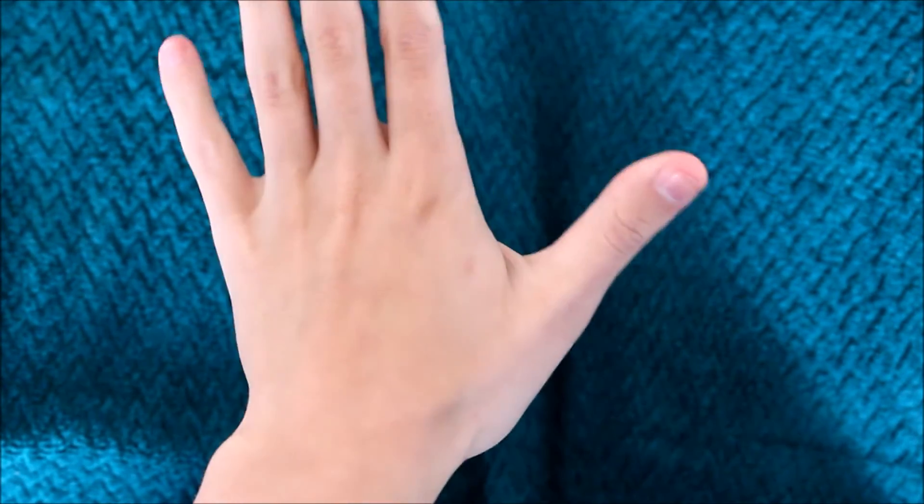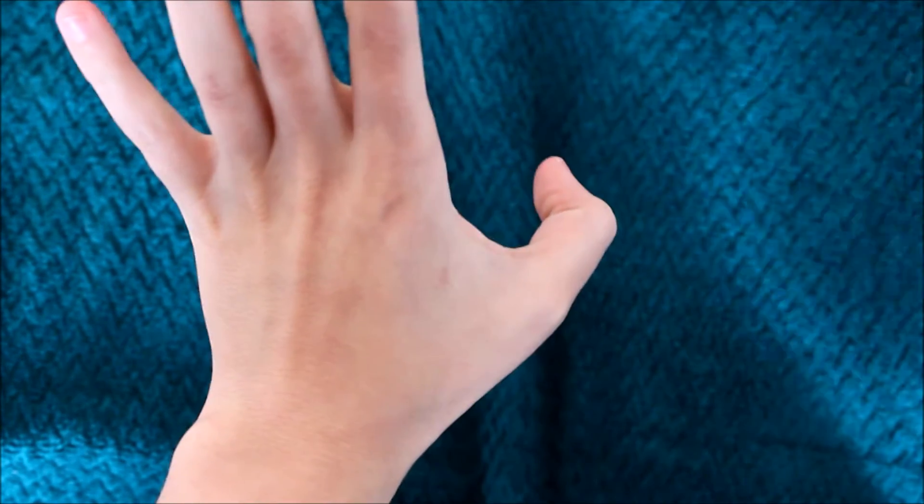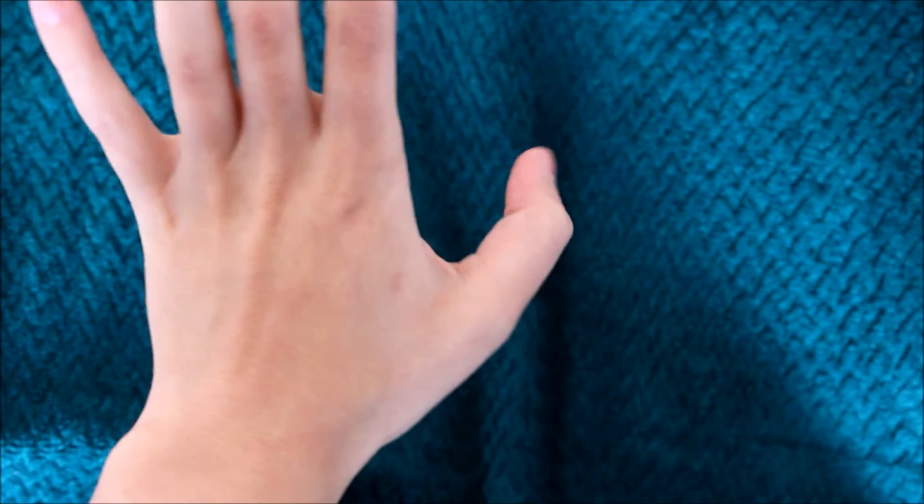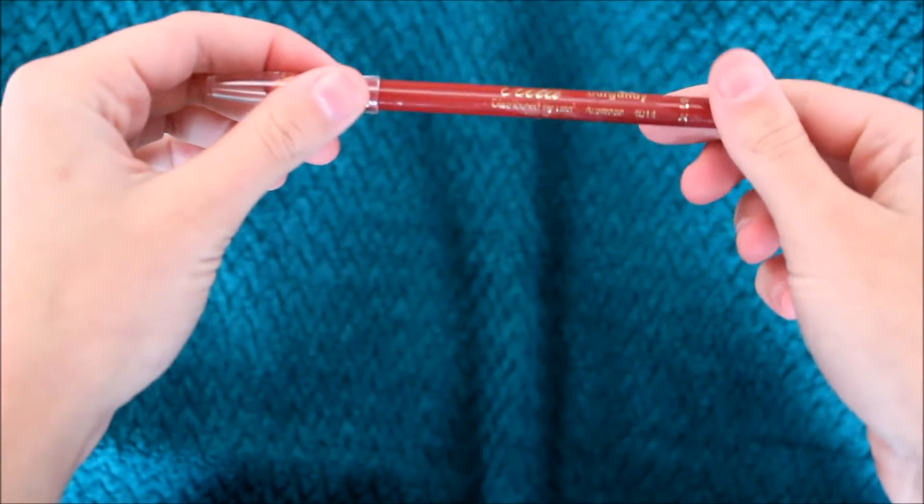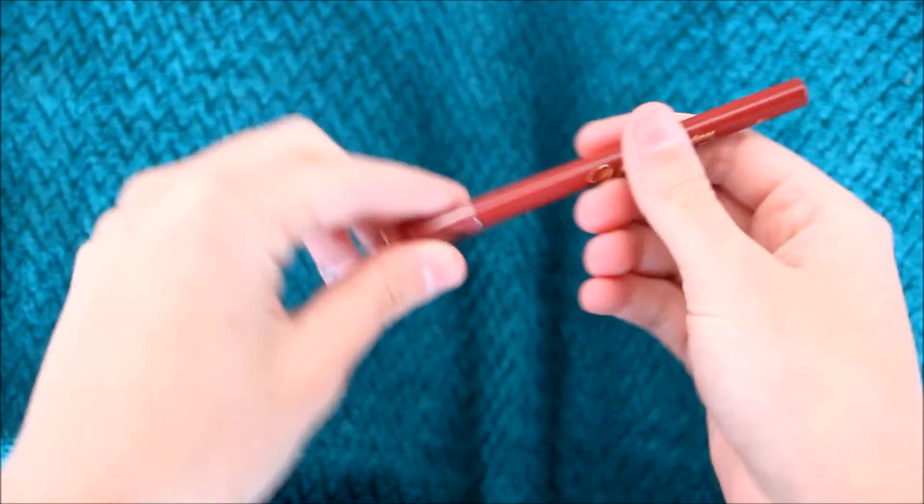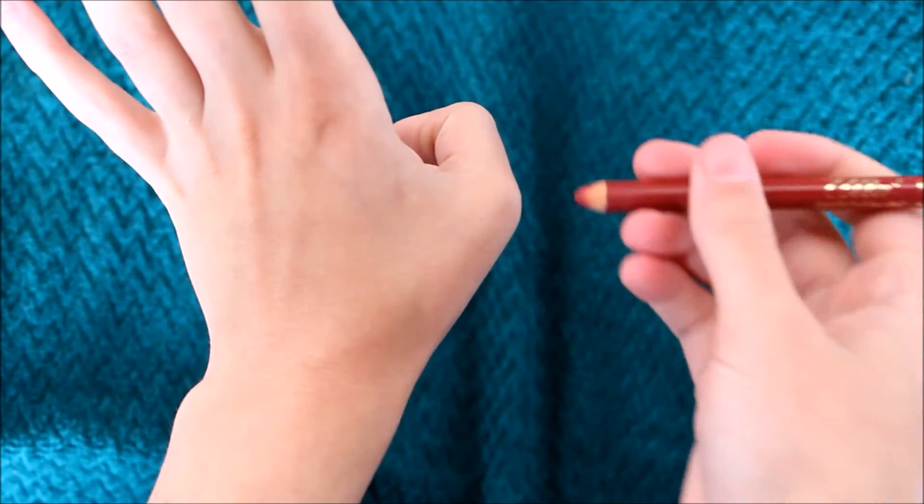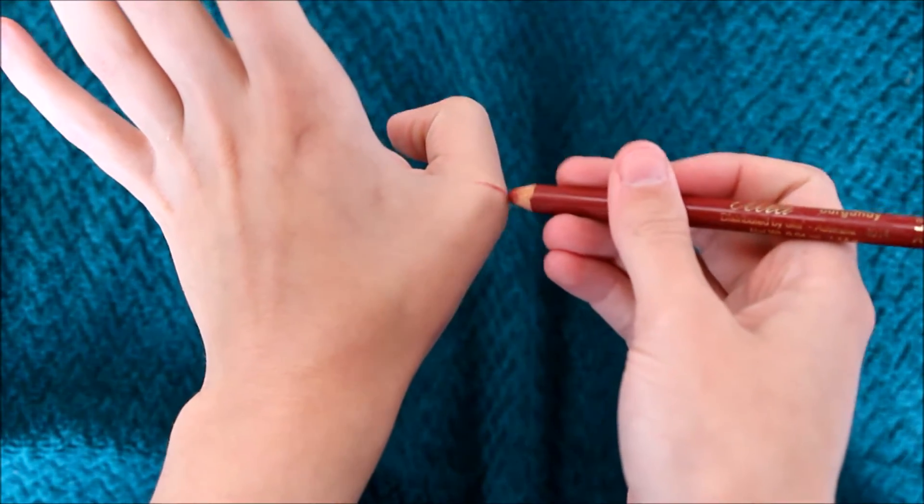So the first thing we're going to do for this injury is just find a way in which your thumb already looks pretty unnatural. I like to go for the last joint on the thumb because it looks really weird when you just push it out from the rest of your hand. So you're going to mark out whatever joint you want to create this look on.